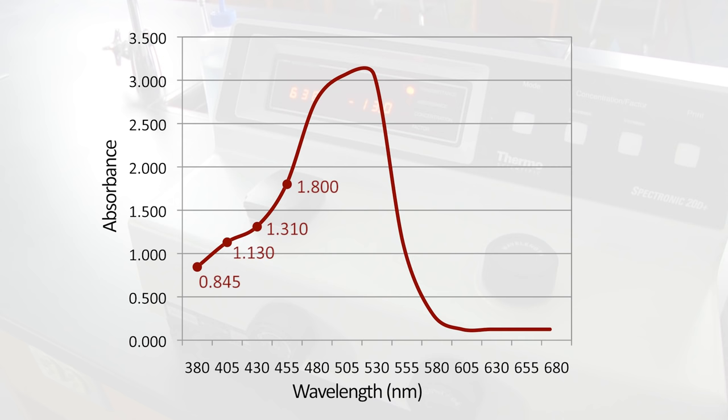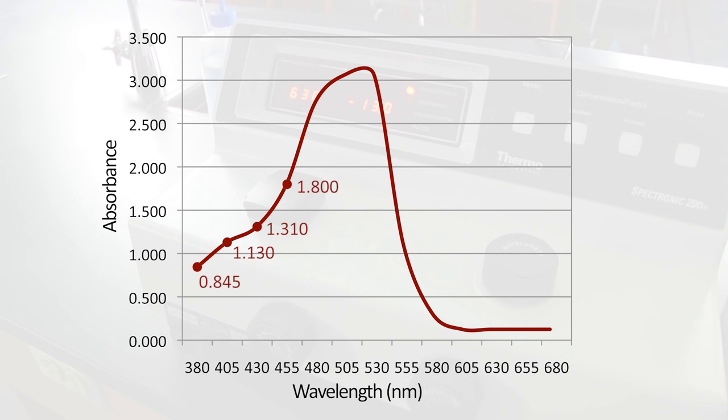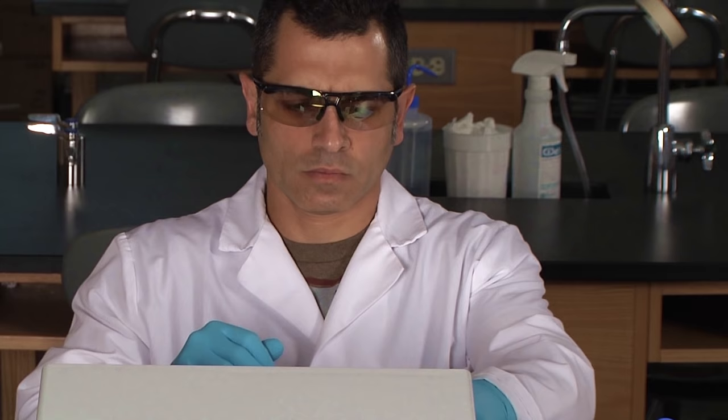By repeating these steps up to 680 nanometers, we can plot the absorbance spectrum for red food coloring. Now that we've finished our first practice exercise using the spectrophotometer, you're ready to enter the lab and try it for yourself.